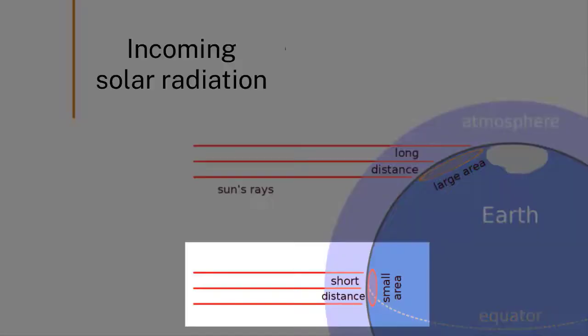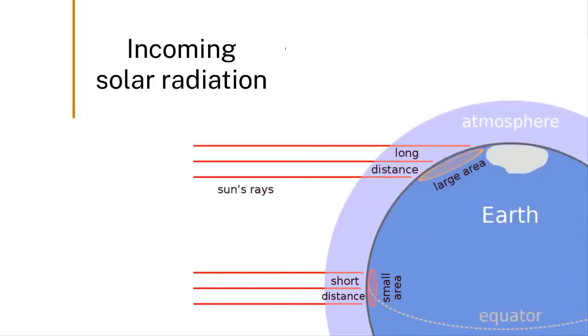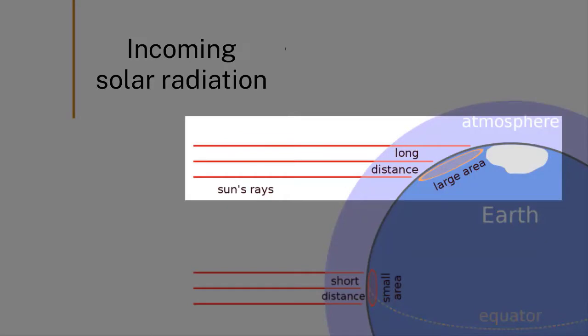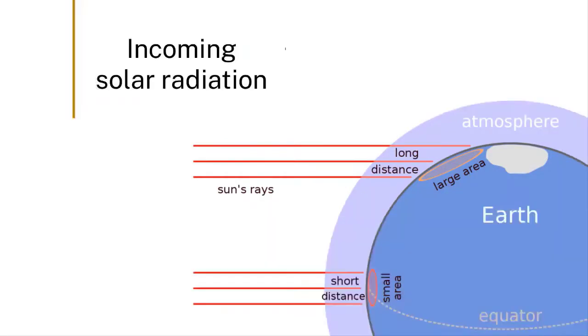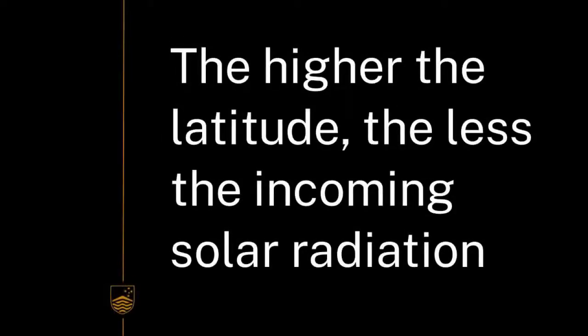Now this incoming solar radiation hits the equatorial regions at a normal angle so they cop the full amount square on. The polar regions however are at an oblique angle to the incoming solar radiation, so the incident radiation tends to be smeared out over a much larger area which is dependent on the latitude. So the higher the latitude, the less incoming solar radiation.